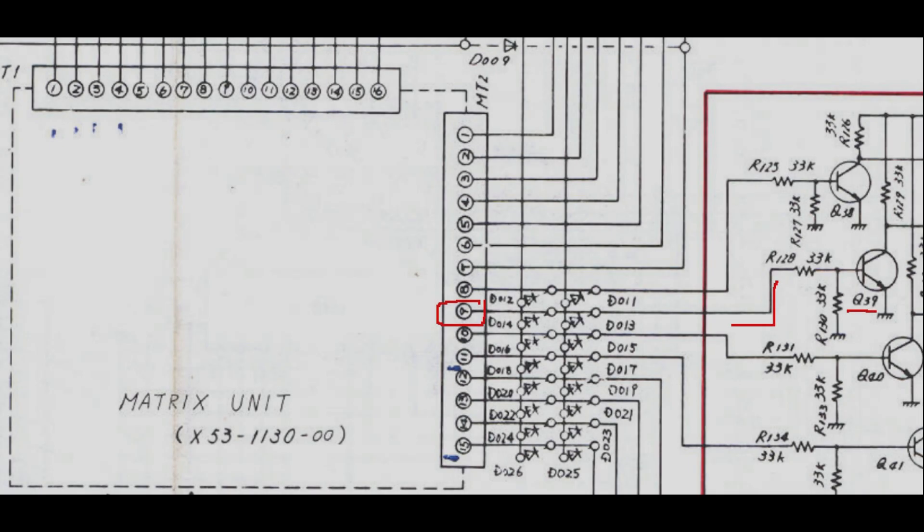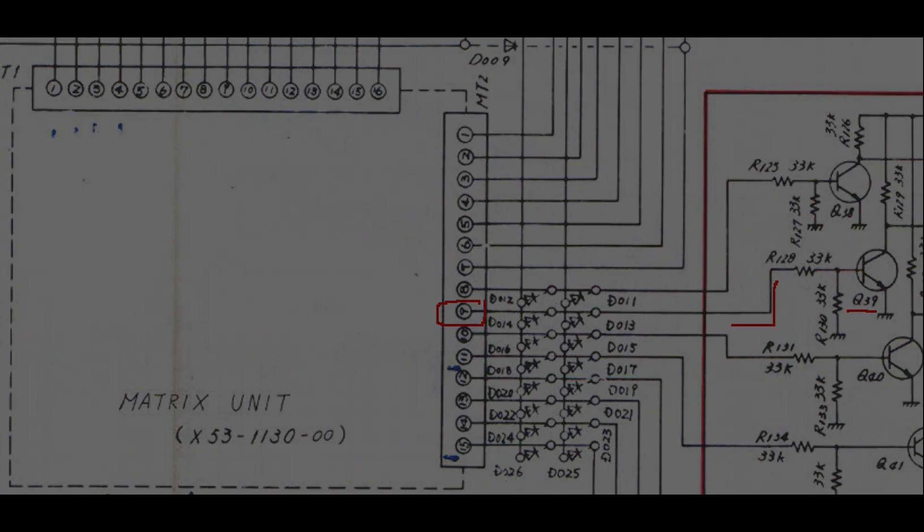I will initially focus on Q39 for the 14 MHz band. As we can see from the schematic, it can be turned on by a positive voltage on P9 from the matrix unit, but also from D014 and D013 that are on the PLL PCB.